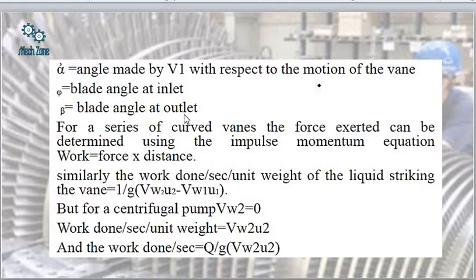Work is equal to force times distance. For the centrifugal pump, if Vw1 = 0, meaning radial flow at inlet, the work done per second per unit weight would be Vw2·U2. The work done per second equals Q/g · Vw2·U2. And Vw2·U2 would be zero if we have radial flow at the outlet section.